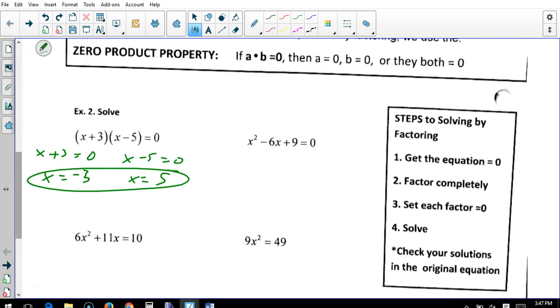Here we have a trinomial. That's an x squared. We need two numbers to give us negative 9 that would add up to negative 6. And we want them both to be negative.